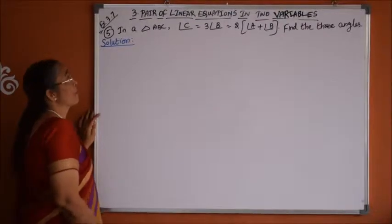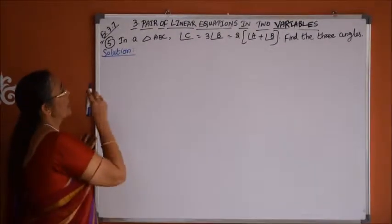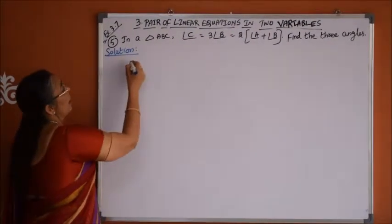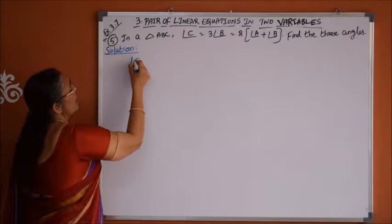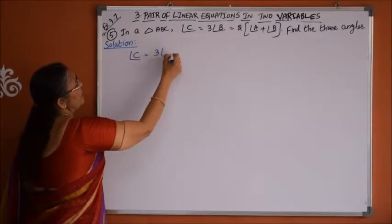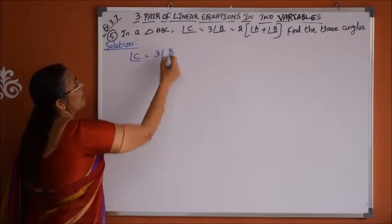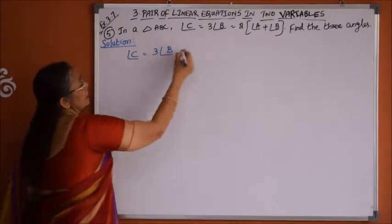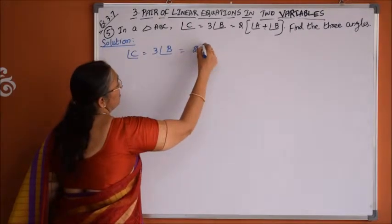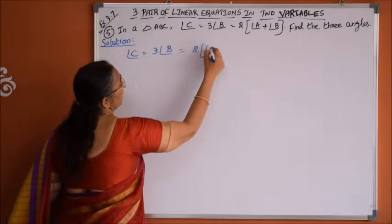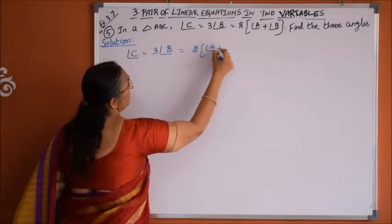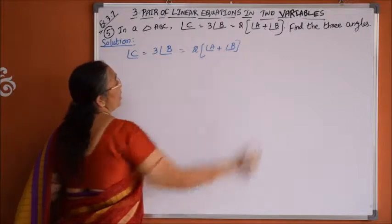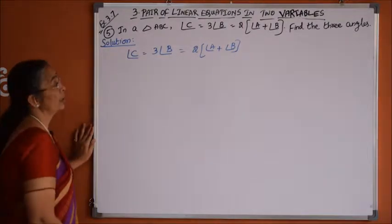Problem number 5. In a triangle ABC, angle C is equals to 3 times angle B, and that is equals to 2 times of angle A plus angle B. Find the 3 angles of the triangle.